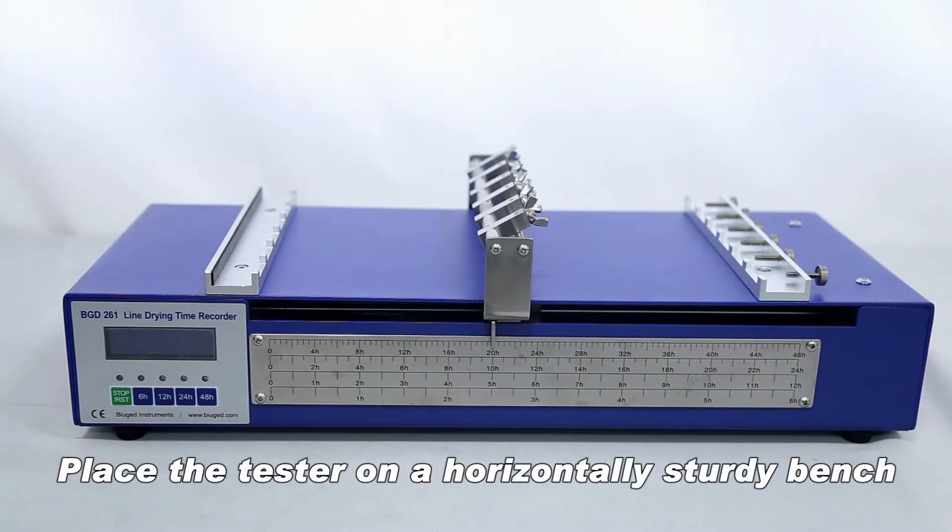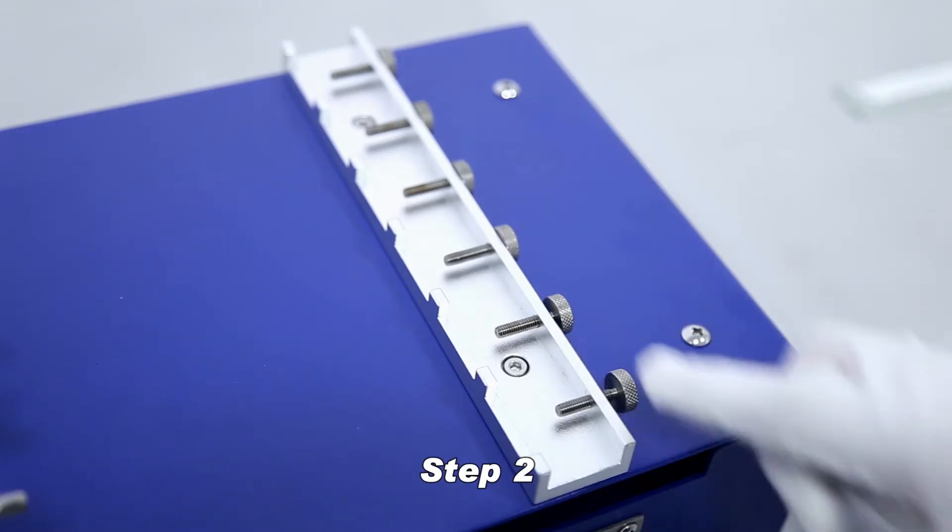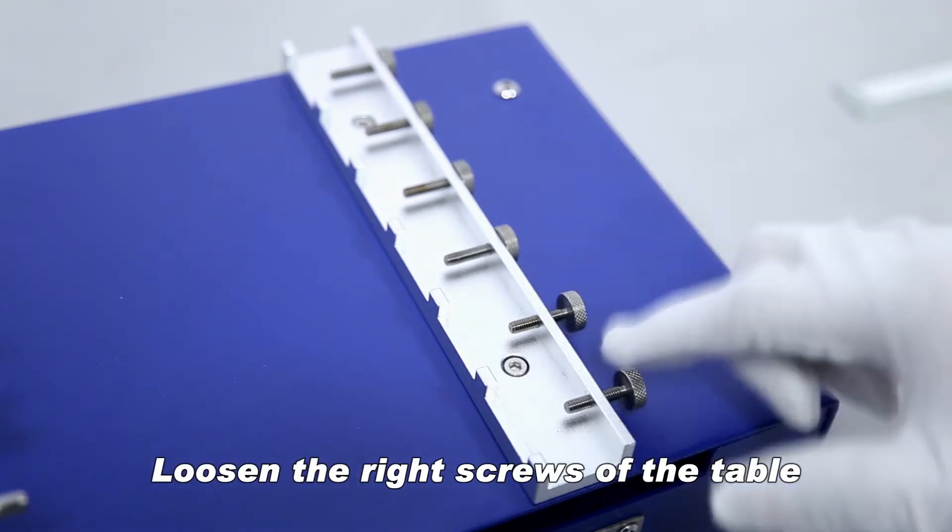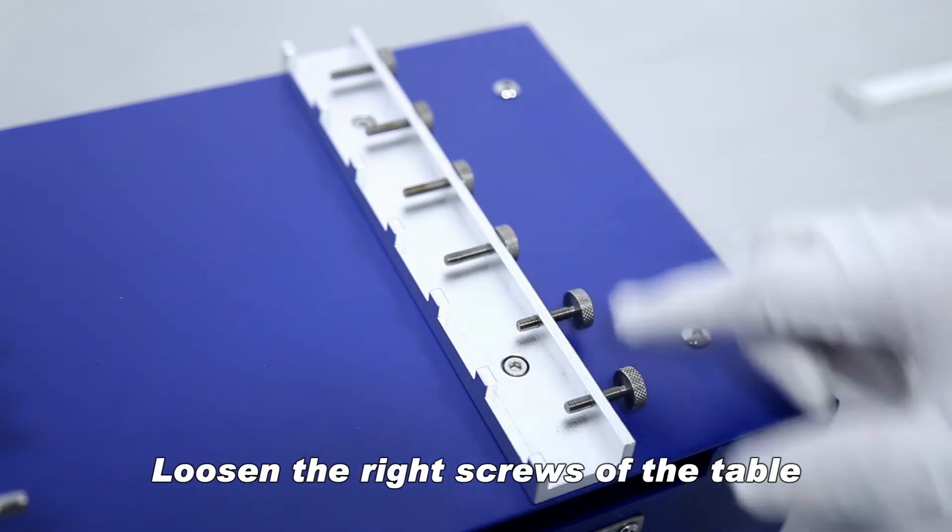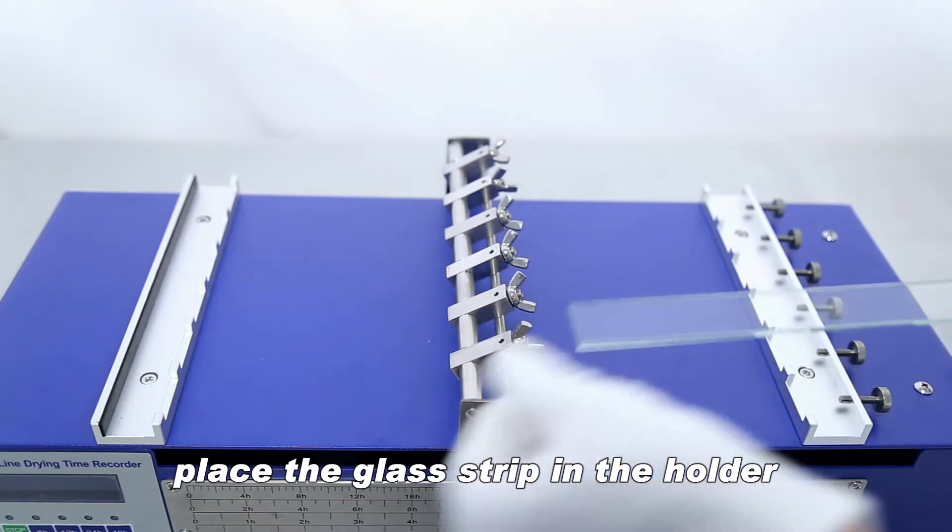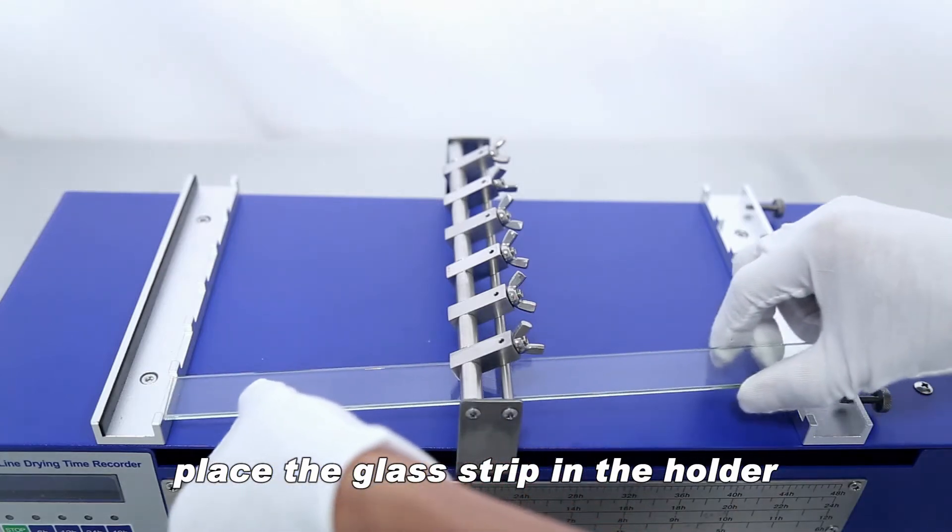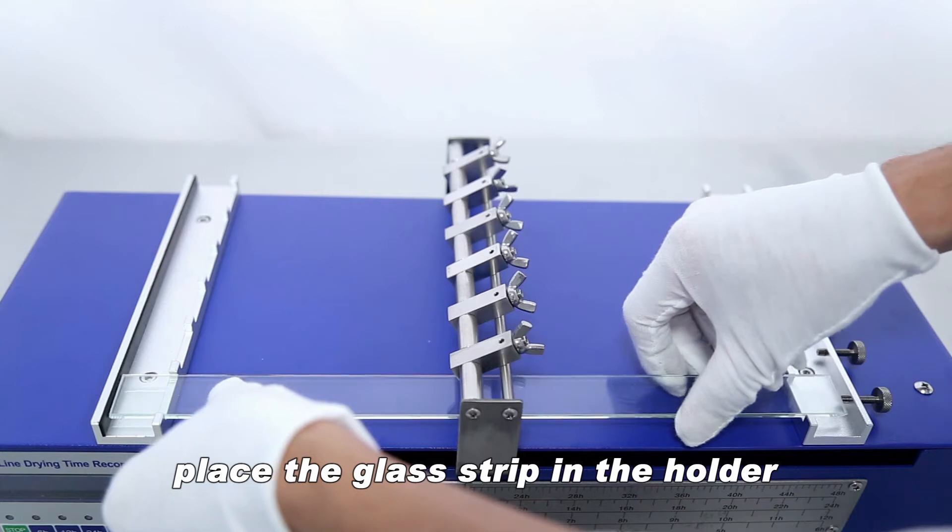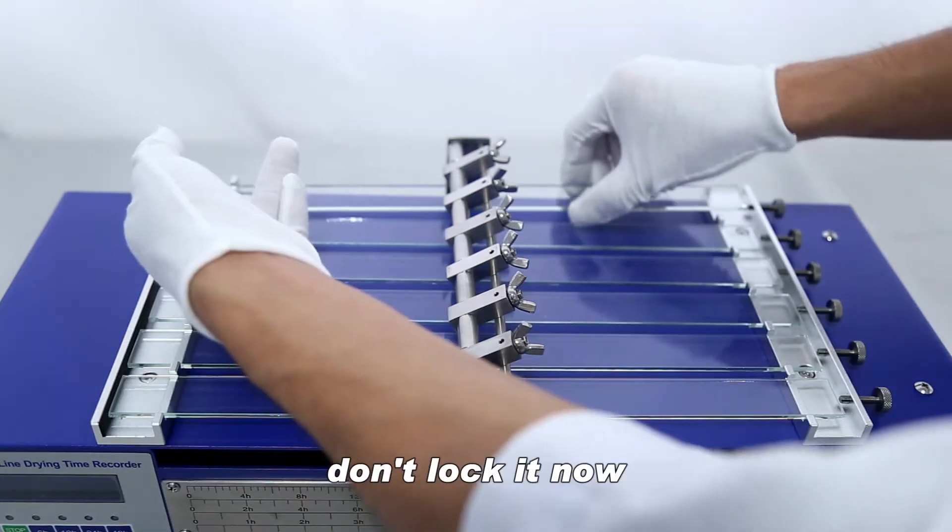Place the tester on a horizontally sturdy bench. Loosen the right screws of the table. Place the glass strip in the holder. Don't lock it now.